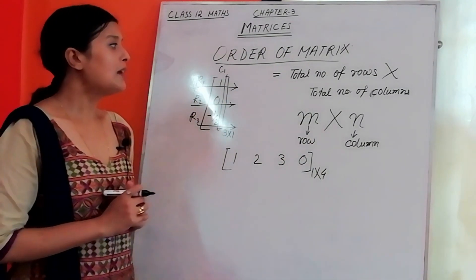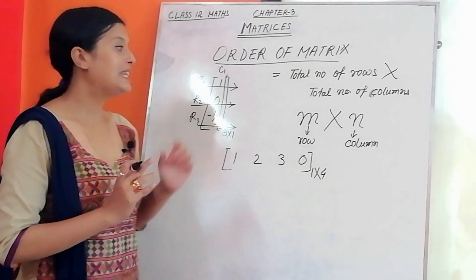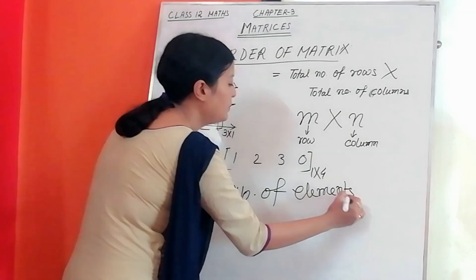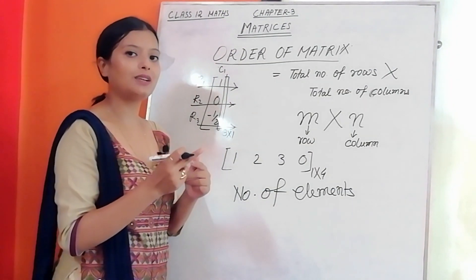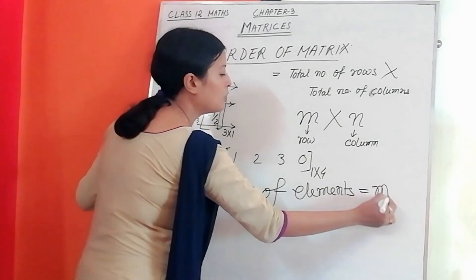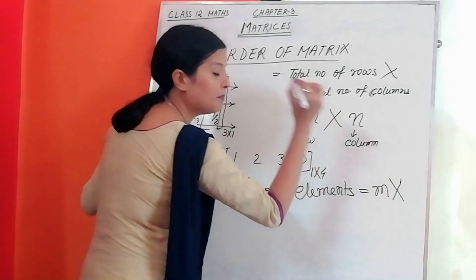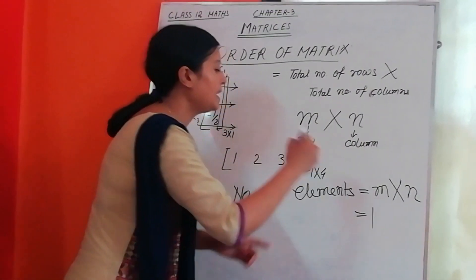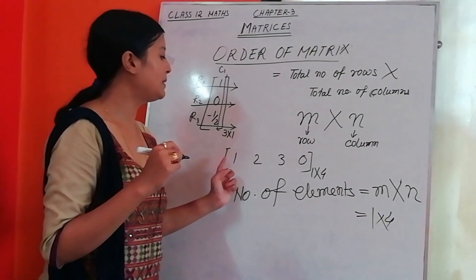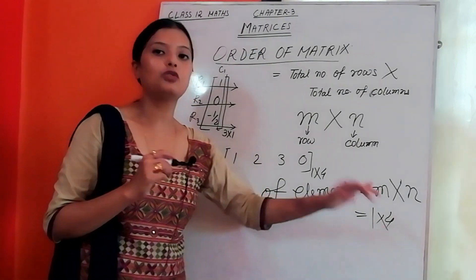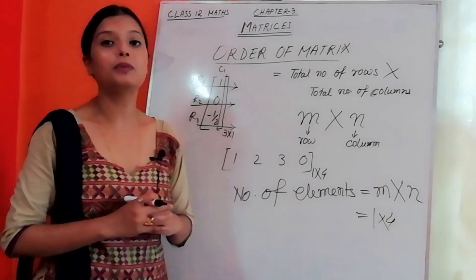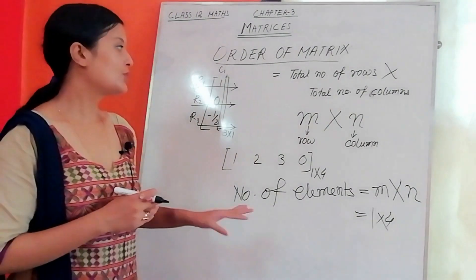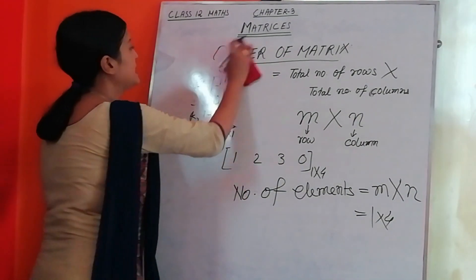From the order, you can also find the total number of elements in a matrix. The total number of elements equals the total number of rows multiplied by the total number of columns. For example, a 1 by 4 matrix has 1 into 4 equals 4 elements. So from the order, we can tell how many elements are in a matrix.